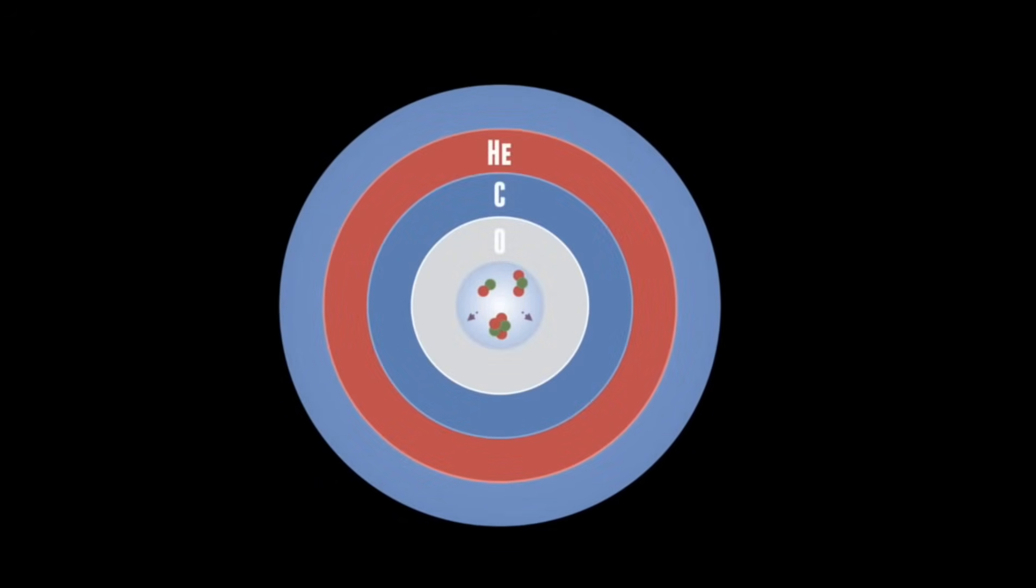Eventually however, the massive star's core becomes composed of simply iron, which sets off the final collapse and the catastrophe.